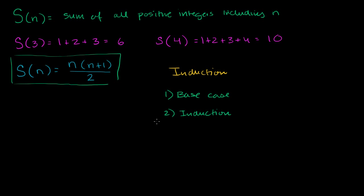The induction step is essentially saying: if we assume it works for some positive integer k, then we can prove that it's going to work for the next positive integer — it's going to work for k plus 1. Now, it doesn't always have to start at 1, because your statement might be true for everything above 55 or above some threshold. But in this case, we're saying it's true for all positive integers, so our base case is going to be for 1.